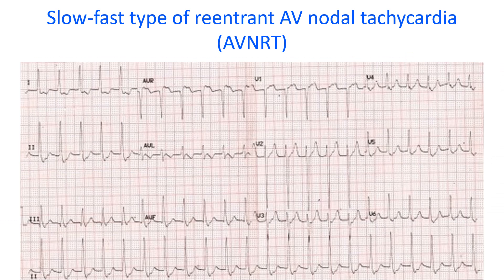Just as frequent ventricular ectopics can be the forerunner of ventricular tachycardia and ventricular fibrillation, frequent atrial ectopics can be the forerunner of atrial tachycardia and atrial fibrillation.